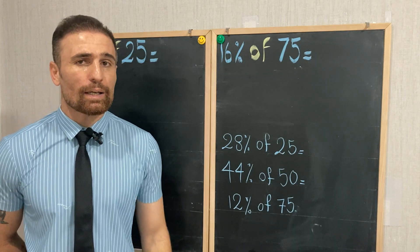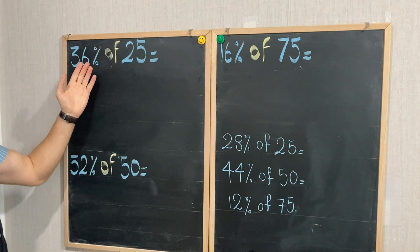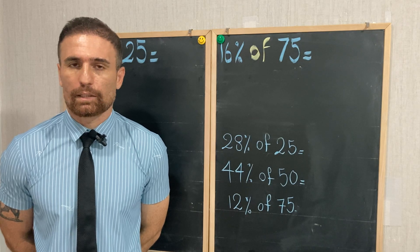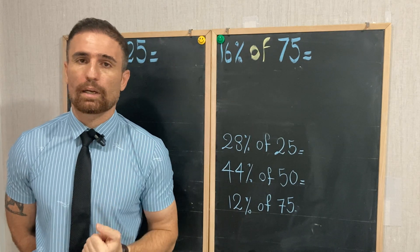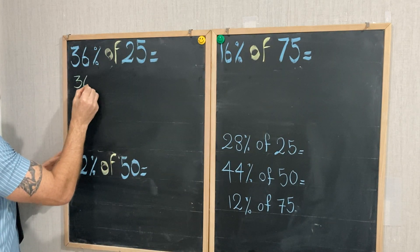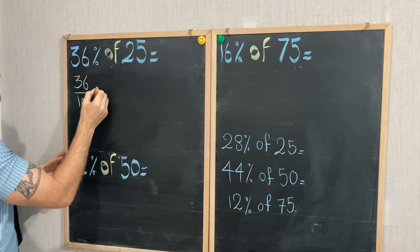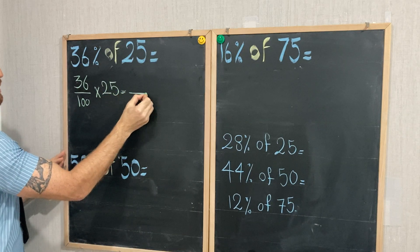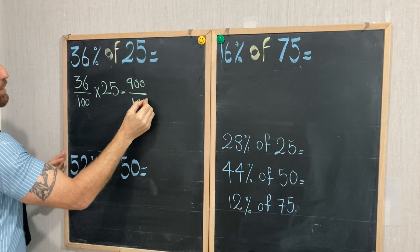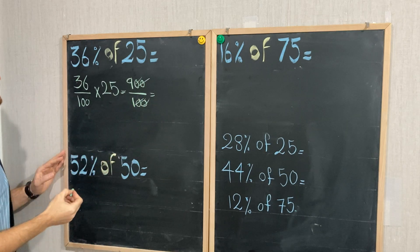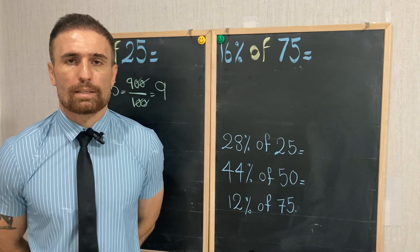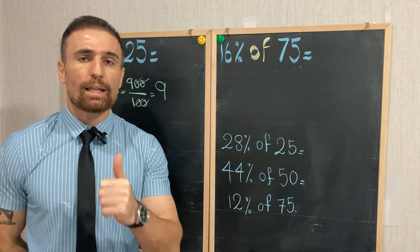The correct answer of this example — 36 percent of 25 — is 9. But how exactly did we get this result in less than one second? Let's solve it: 36 percent means 36 over 100, times 25. That gives us 900 over 100. The two zeros cancel out and the answer is 9. But this standard method takes more than one second.